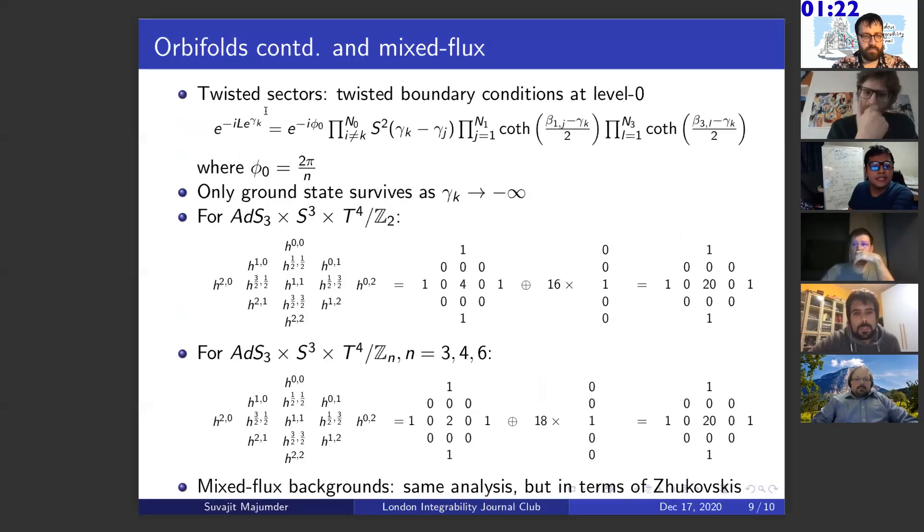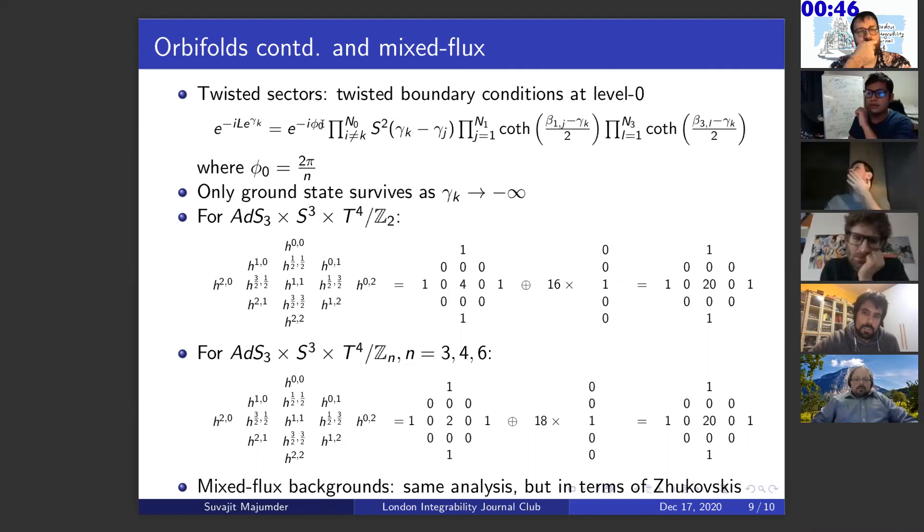For twisted sector, the modification that happens is at the level of the Bethe equation. And we see that there is a twisted boundary condition that we need to impose with the twisting angle being 2 pi by N. One can notice from this that the auxiliary Bethe equations stay the same as before. What happens at the zero momentum limit is only the ground state survives, and no excitations on top of that can exist. You can check that at the level of the Bethe equation. What we end up with is that we get a bunch of states, one state for each of the twisted sectors under the orbifold action. That is labeled by the fixed points. If we account for all those twisted states, they contribute to H^{1,1}, the Hodge number H^{1,1}.